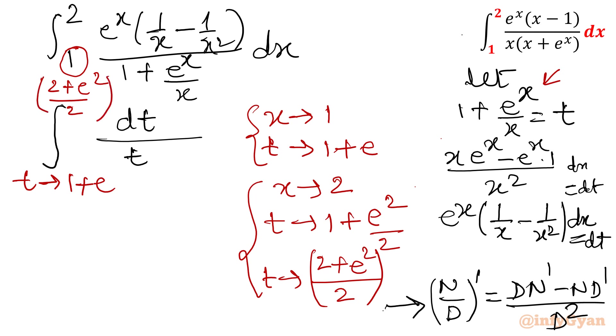Now integration of dt over t: ln t. Lower limit is 1 plus e. Upper limit is 2 plus e square over 2.